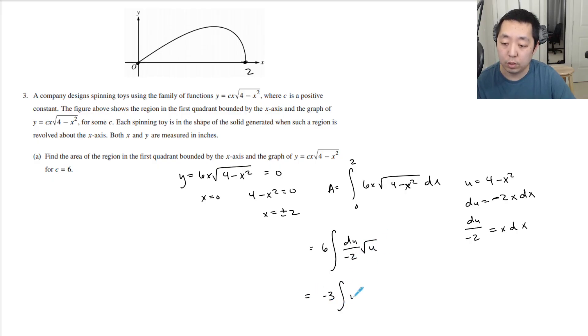Plugging it in, that becomes 6 times the integral of √u · du/(-2), which is -3·u^(1/2) du. This is -3·u^(3/2)/(3/2), which is -3·(2/3)·u^(3/2) = -2u^(3/2). Now for bound conversions: u(0) = 4 and u(2) = 0, so we're going from 4 to 0.